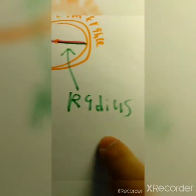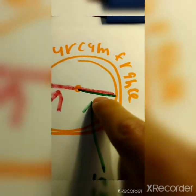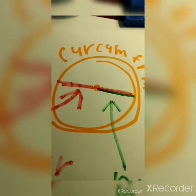Referencing the radius — you can actually make the radius go around and around and around the circle.